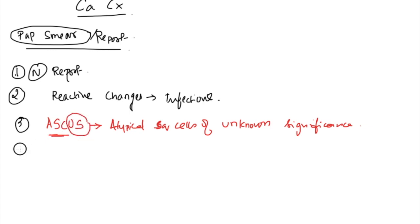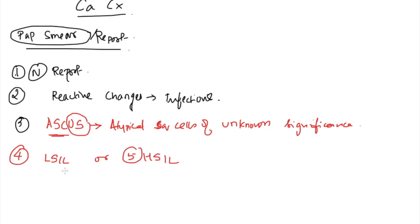The other possible outcomes are LSIL (low-grade squamous intraepithelial lesion) or HSIL (high-grade squamous intraepithelial lesion). So the possible outcomes of a pap smear report are: normal, reactive/inflammatory, ASCUS, LSIL, or HSIL.